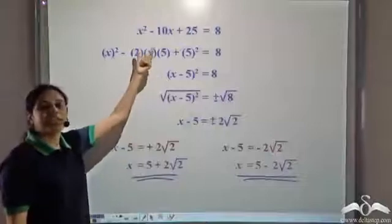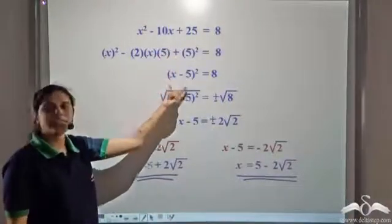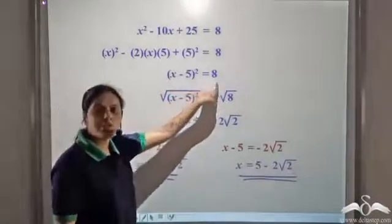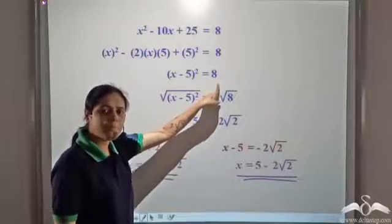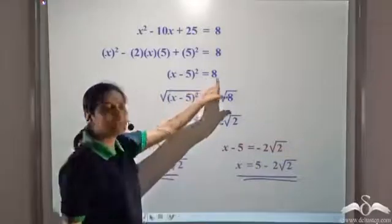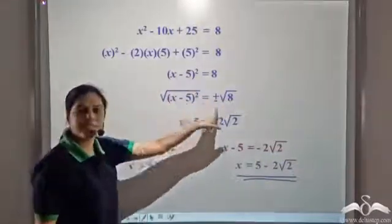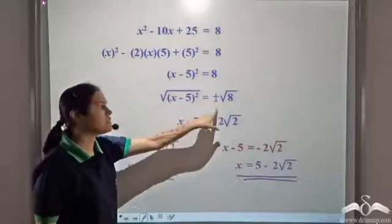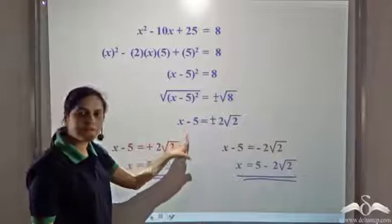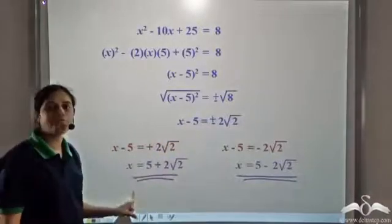This equation was represented in the form of a perfect square equal to a constant. Although the constant 8 is not itself a perfect square, we have (something)² = constant. We take the square root of both sides, consider the positive and negative sign on the right hand side, then simplify and solve the two equations to get the value of x.